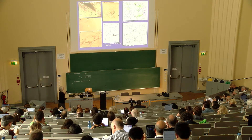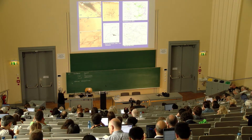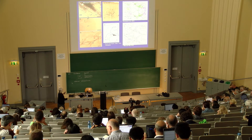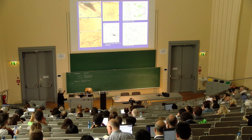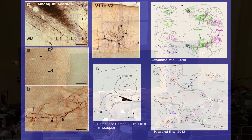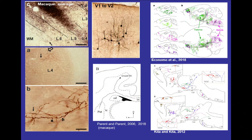Those many axons are very variable in terms of the number of arbors, the shape of arbor, and number of boutons. This is an example of a single axon — here's the main trunk arbor, and then this is the detail. What can you do with that? Well, you can count, you can look at size, you can look for variability.